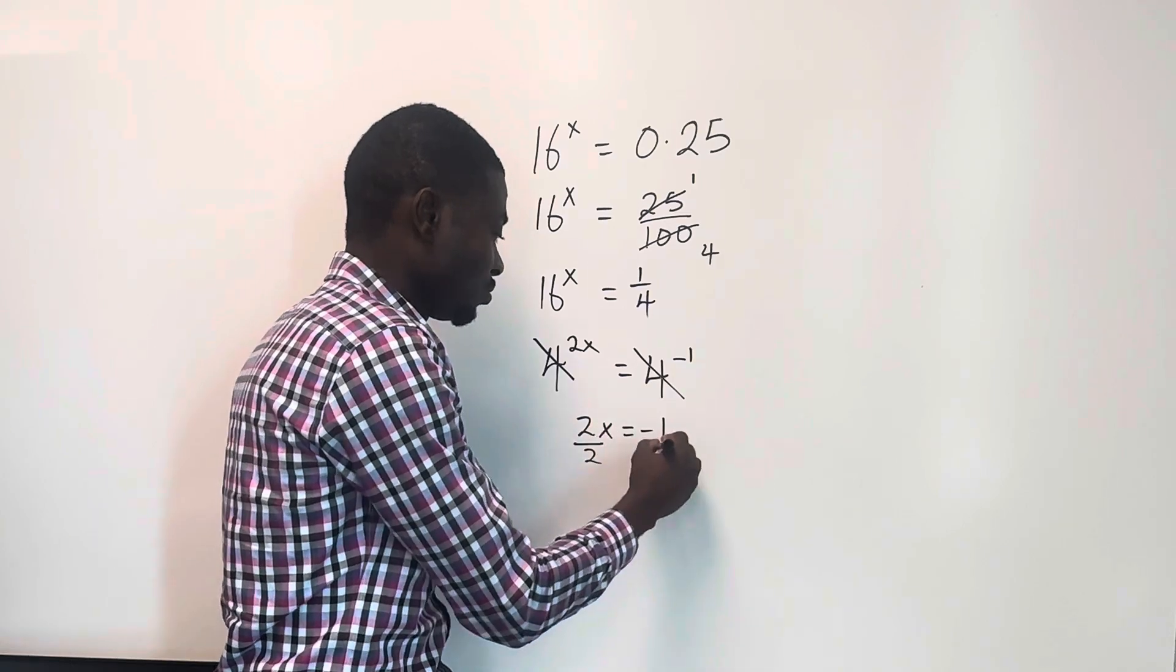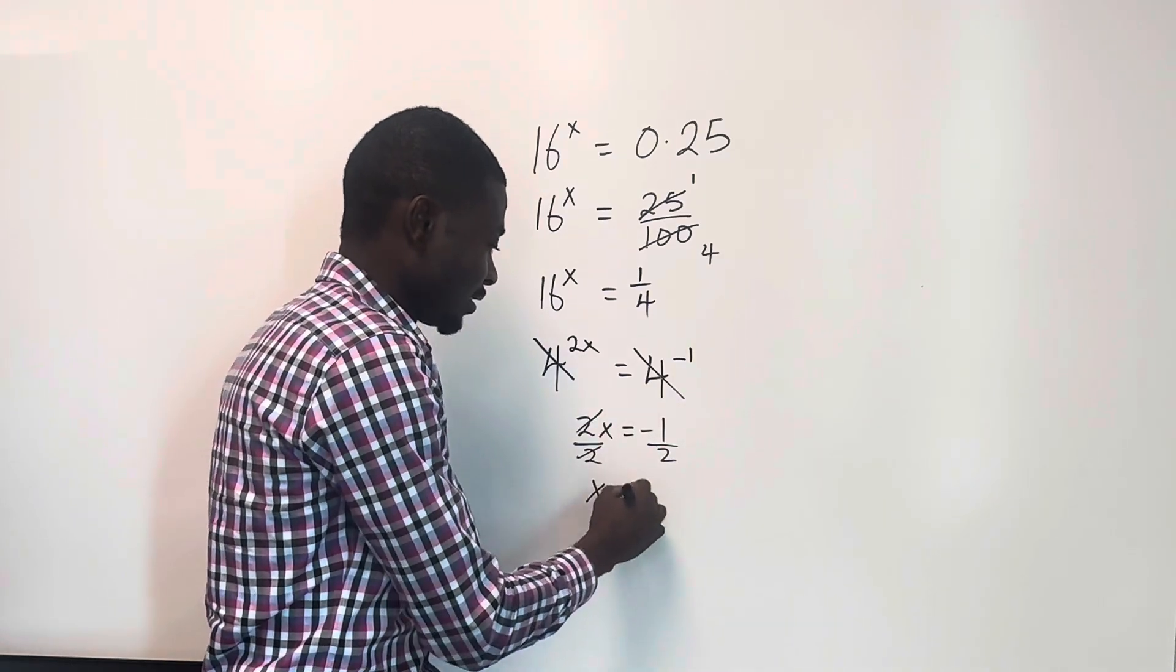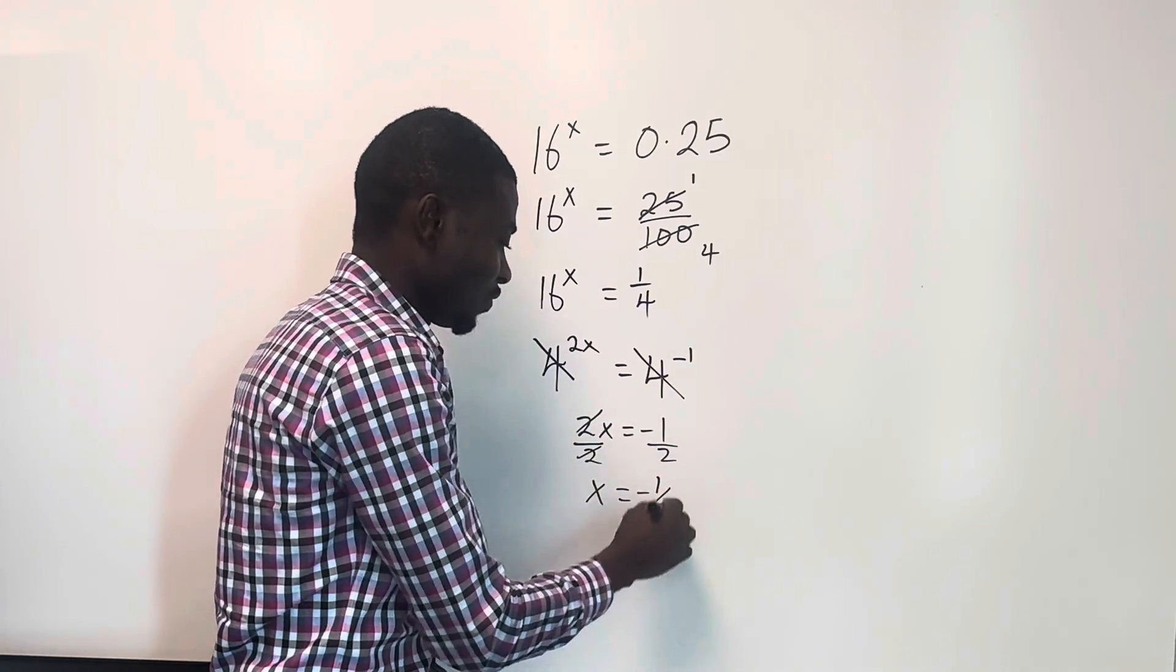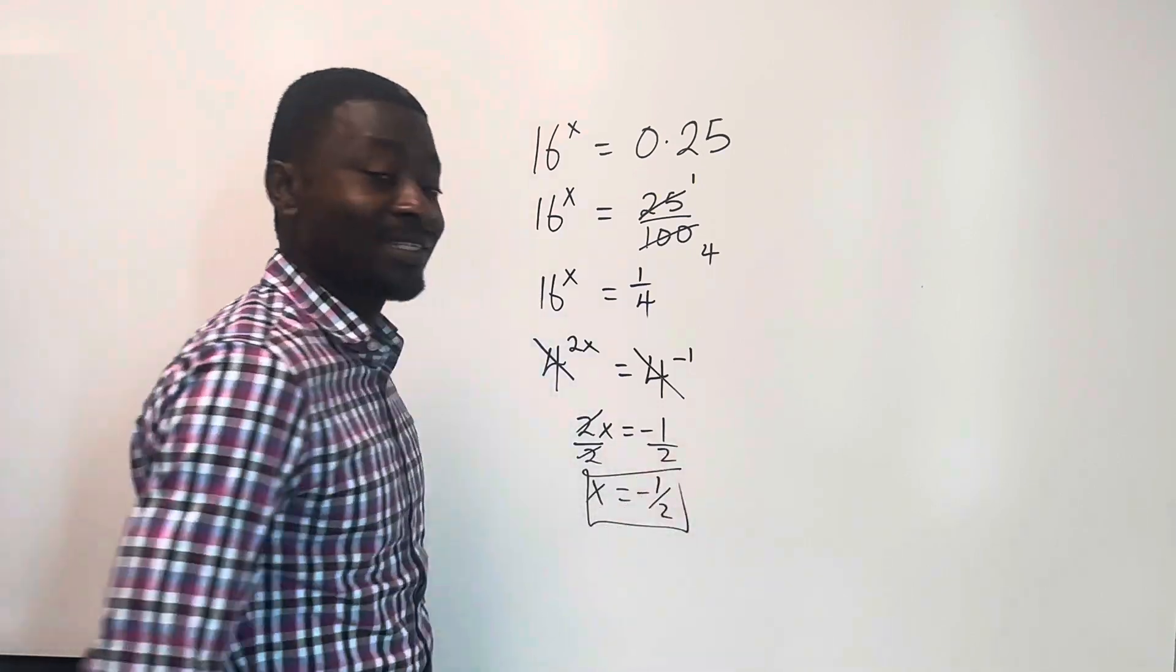So we'll divide this by 2. Divide this by 2. So our value x is equal to negative 1 over 2. And that is it. Simple, right?